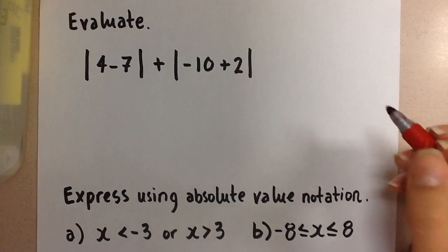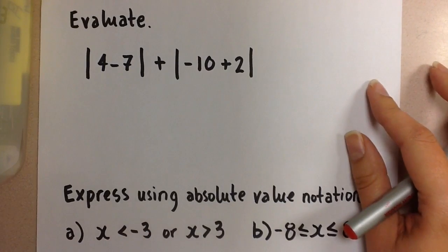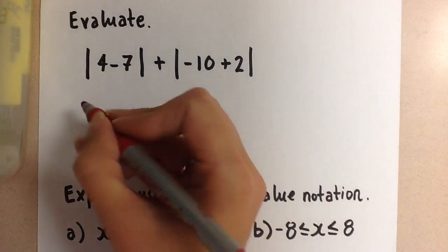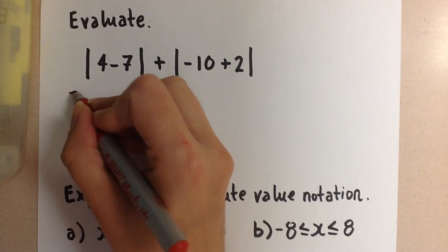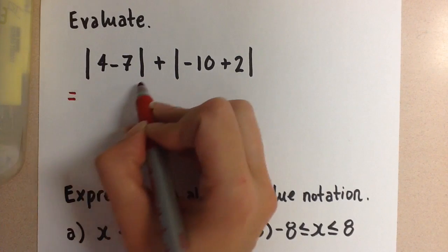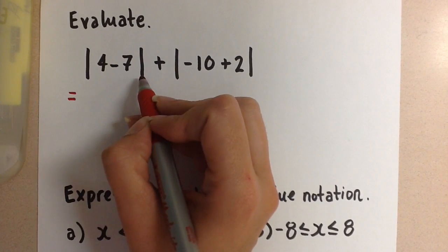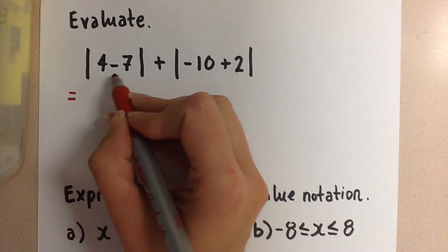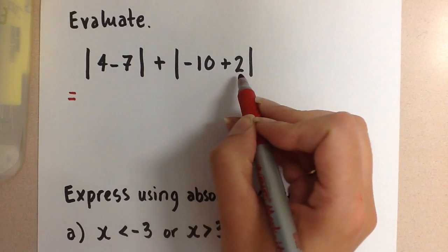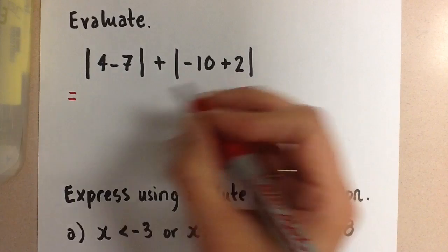To do this, we have to remember that the order of operations still hold here. So we treat the absolute value signs as two parentheses or brackets and compute what's inside of each one first before we move on with the problem.